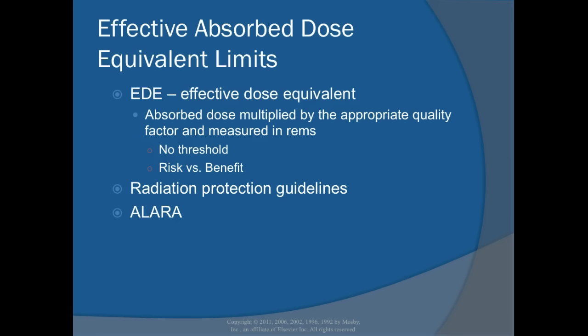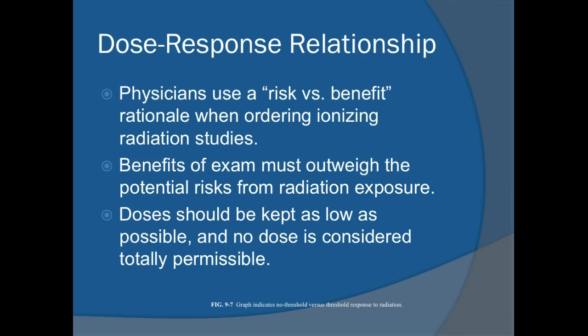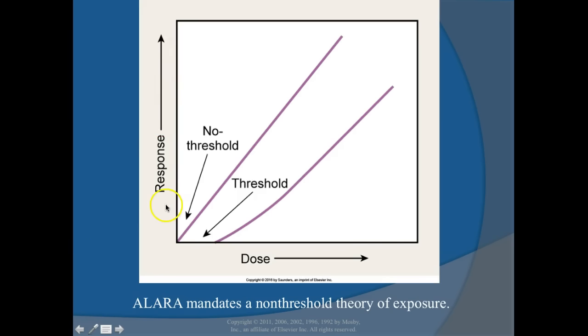The Effective Dose Equivalent (EDE) is the absorbed dose multiplied by the appropriate quality factor, measured in REM. There is no threshold — we look at risk versus benefits. The physician should use a risk-versus-benefit rationale when ordering radiation studies; the benefit must outweigh the risk of radiation exposure. No dose is considered totally permissible. In radiation protection, we operate on the non-threshold model: any amount of radiation can cause biological effects.